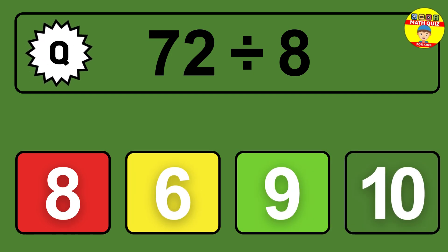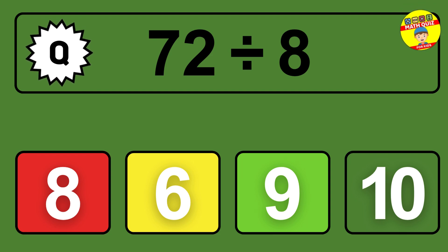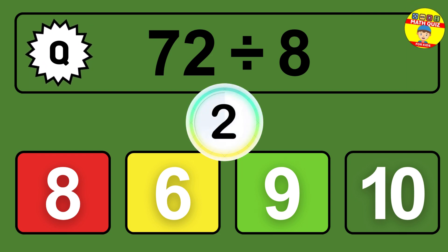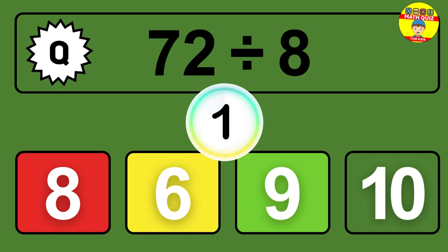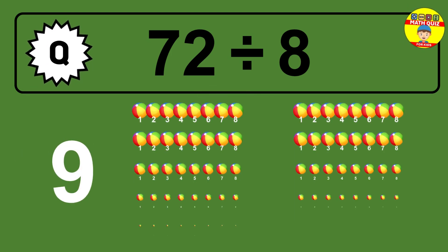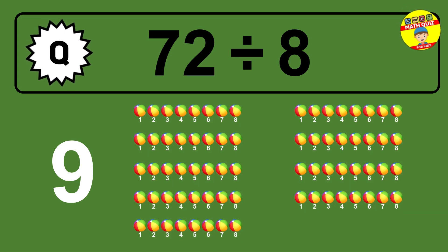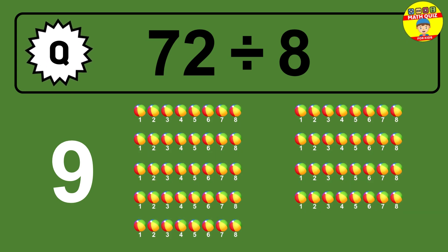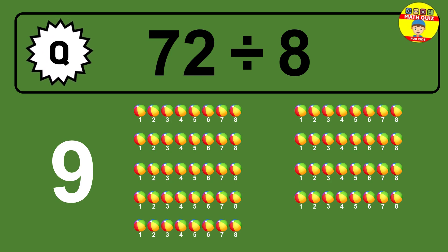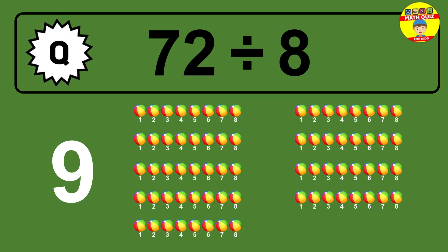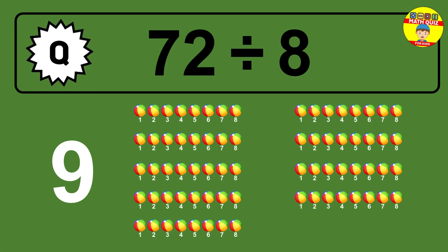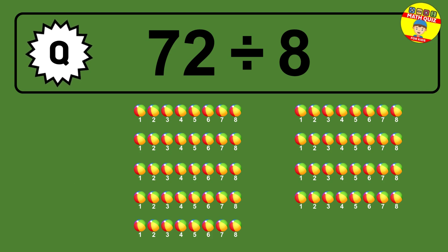What is 72 divided by 8? Imagine this: you have 72 objects to divide into groups of 8. How many groups can you make? Let's think about it. Ready to find out? Let's break it down. Imagine you have 72 objects — can you picture them lined up? Now think about splitting them equally into smaller groups.